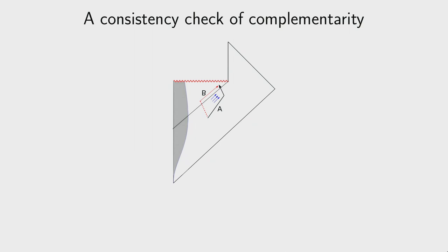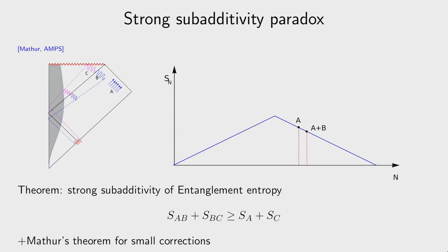There's one more problem with complementarity related to entanglement properties. According to Hawking's calculation, newly produced Hawking particles B are always highly entangled with their interior partner C. But we also argued that after the Page time, particle B must be mostly entangled with the early radiation A. Having B simultaneously maximally entangled with both C and A leads to a violation of monogamy of entanglement.